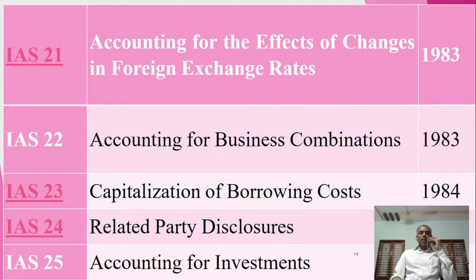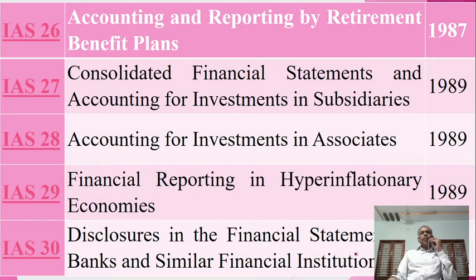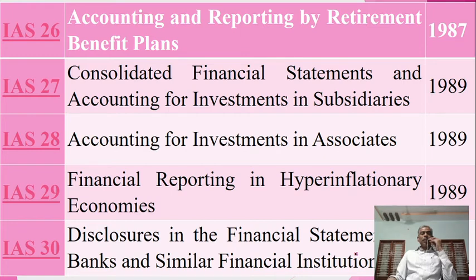IAS 25 on accounting for investments provides policies and guidelines, established in 1986. IAS 26 covers accounting and reporting by retirement benefit plans for employees, with standards and guidelines fixed, established in 1987. IAS 27 on consolidated financial statements and accounting for investments in subsidiaries is established in 1989. IAS 28 on accounting for investments in associates is also established in 1989. IAS 29 covers financial reporting in hyperinflationary economies, established in 1989.